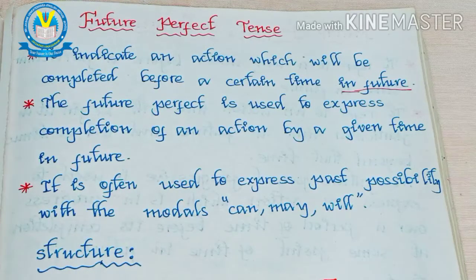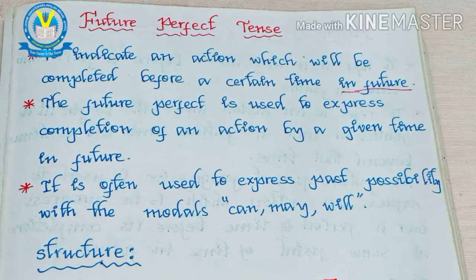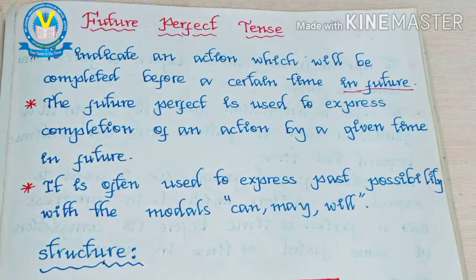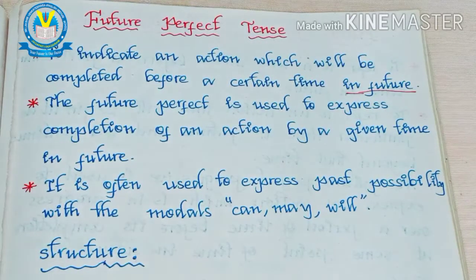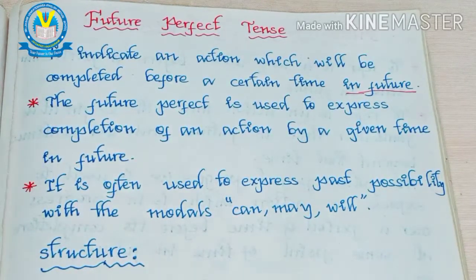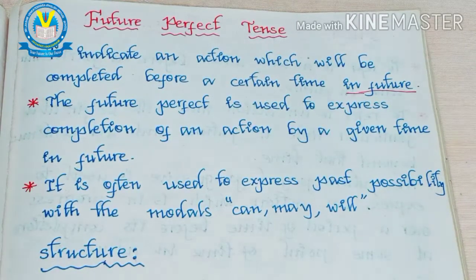Future perfect tense is used to indicate an action which will be completed before a certain time in the future. The action is going to take place in the future, but we know that the action will complete at only a particular time. For example, we know that your birthday will fall on a particular date next year.